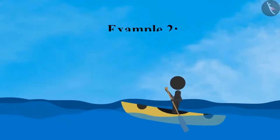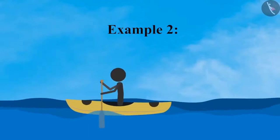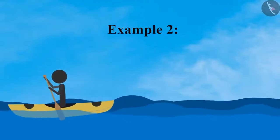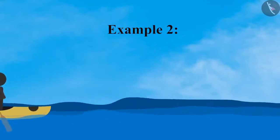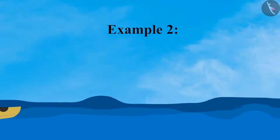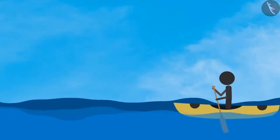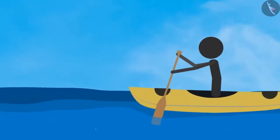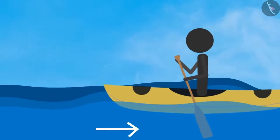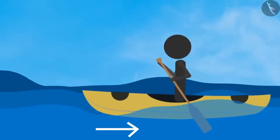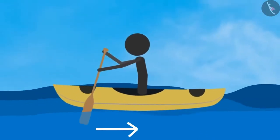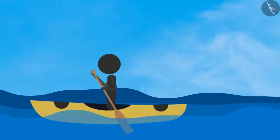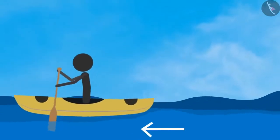Example two: consider the case of rowing a boat. While rowing, pulling the oar in the backward direction through the water results in the generation of an equal and opposite force, which in turn helps the boat move forward.